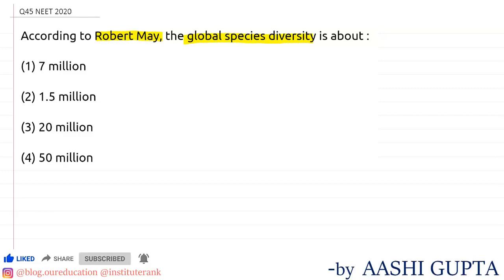This is a direct question and the answer is 7 million. Robert May has told that the global species diversity is about 7 million. And according to IUCN — that is the International Union for Conservation of Nature and Natural Resources — the plant and animal species so far described, the total count is more than 1.5 million.